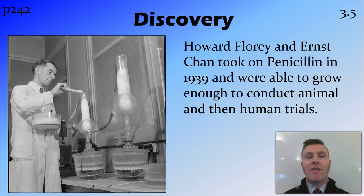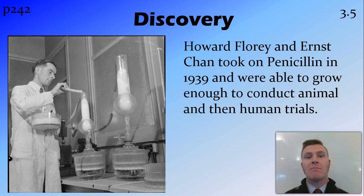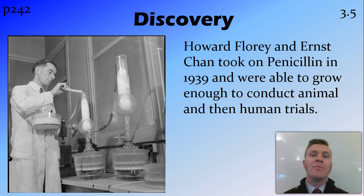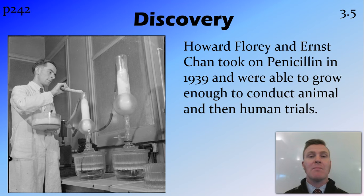The way they found to grow and harvest it was fairly hard work and took up a lot of space — all these different pots, chains, and buckets in the basement at Oxford University. In the first human trial on a 43-year-old policeman with a bacterial infection in his head, he originally started getting better, but halfway through the trial they ran out of penicillin and had to stop. Subsequently he got worse and unfortunately died.